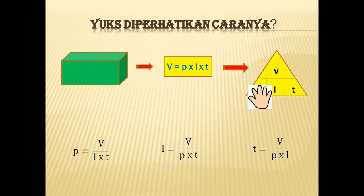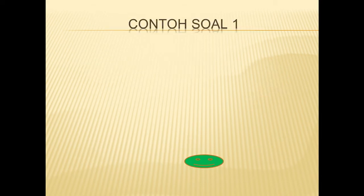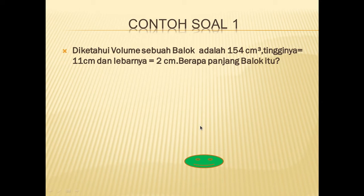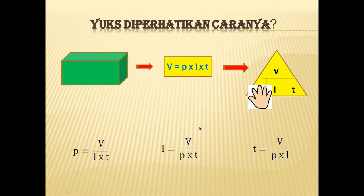Kita masuk ke contoh soal yang pertama. Diketahui volume sebuah balok adalah 154 cm kubik. Tingginya 11 cm dan lebarnya 2 cm. Berapa panjang balok itu? Siapa yang mau mencoba kira-kira rumusnya bagaimana? Yang ditanya adalah panjang balok. Kalau yang ditanya adalah panjang balok, seperti pada rumus tadi, P-nya kita tutup sehingga rumusnya adalah: panjang sama dengan volume dibagi lebar dikali tinggi.